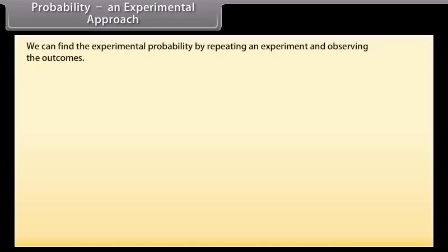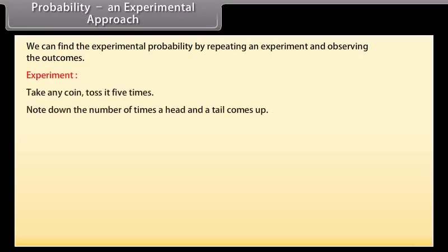We can find the experimental probability by repeating an experiment and observing the outcomes. Let's do an experiment. Take any coin, toss it five times. Note down the number of times a head and a tail come up.